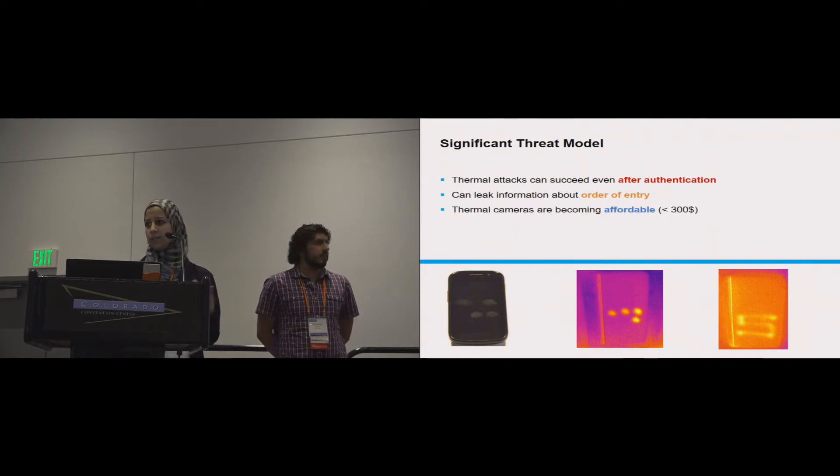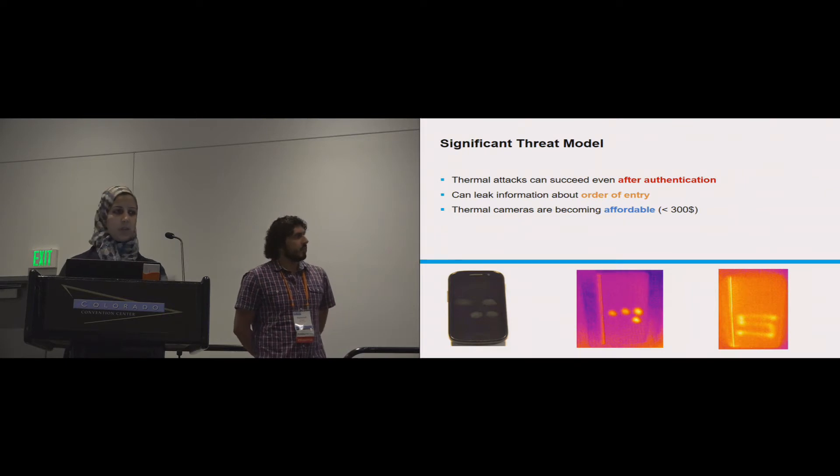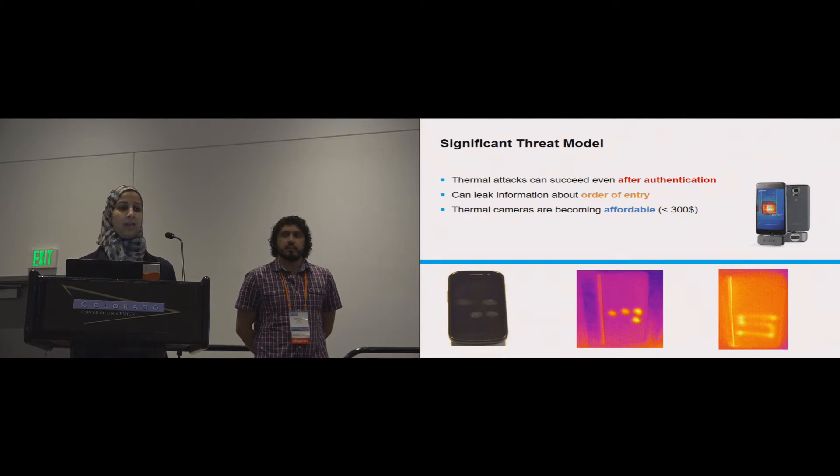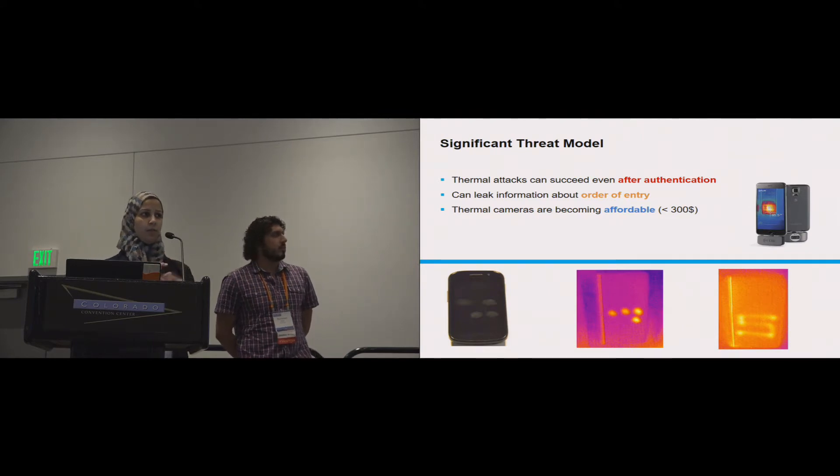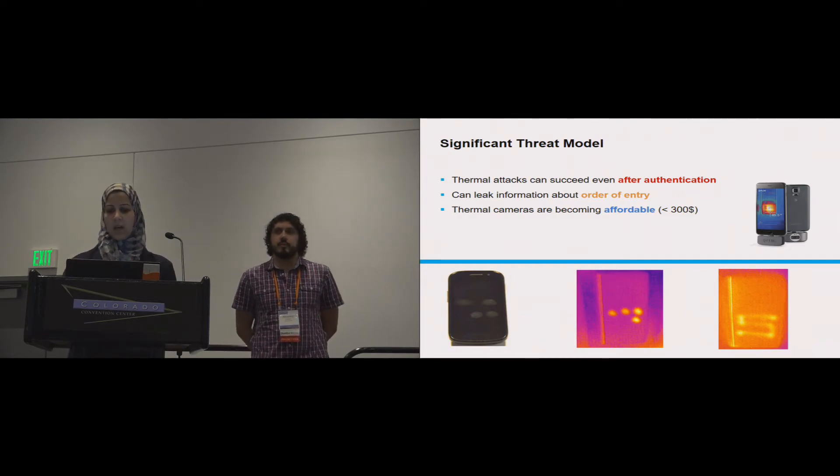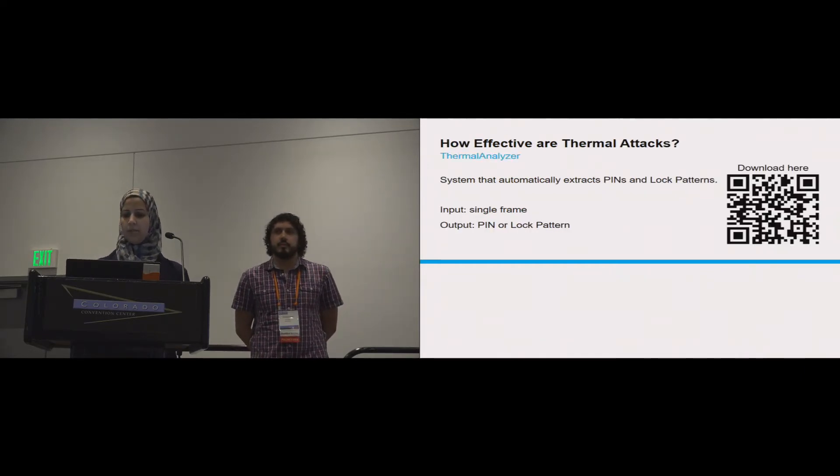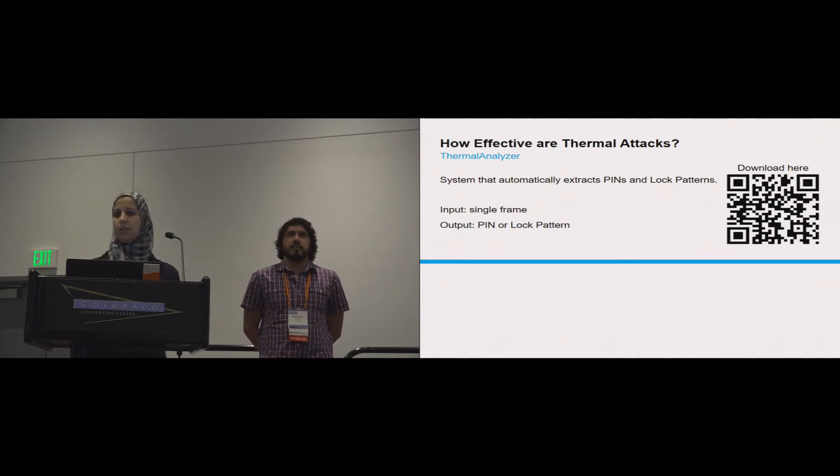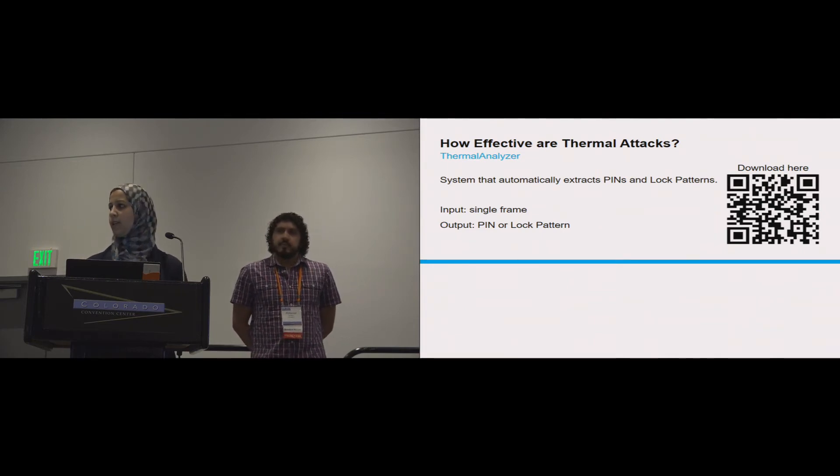Last but not least, thermal cameras were actually considered kind of a fancy tool or expensive tool, but now they're really becoming affordable in terms of cost and size. Now we can get a thermal camera for under 400, like 300 euros or even less, and you can actually have it as an accessory on your phone. You plug it to your phone and tada, you have a thermal camera in your phone. So far it's a significant attack because of what we just mentioned, and actually what we found is—this will be discussed later—even if you try to attack after 30 seconds you can get up to 100% recognition accuracy for the patterns.